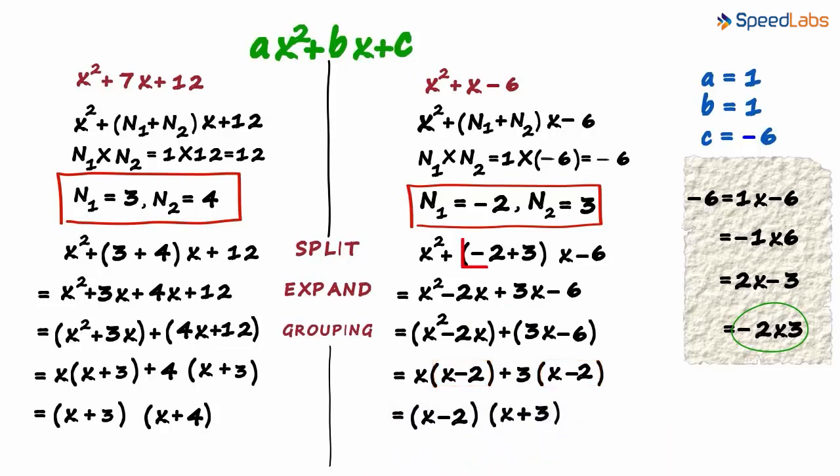We split the coefficient of the middle term, open the brackets, and factorized by grouping. If you noticed, in both examples the value of a is 1. This kind of factorization gets even more interesting when a is not equal to 1. We will cover that soon.